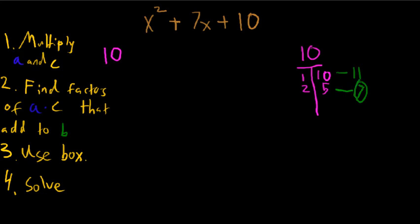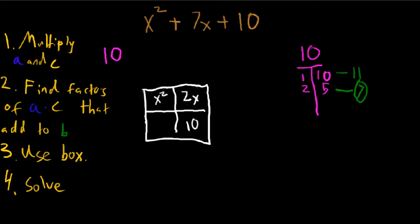Now use the box. So I'm going to use the box, but what you'll find is you don't actually have to use the box when a does equal 1. So if we drew out our box like this, then we get an x squared here, a 10 here, and our two factors, so 2x and 5x. But since there's no other number in front of this x squared, we just put an x here, and then this is just going to be the coefficient of the factor.